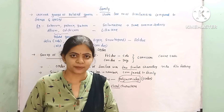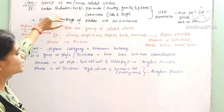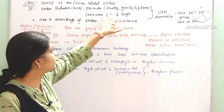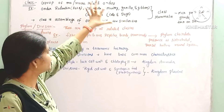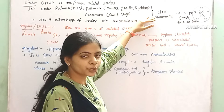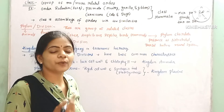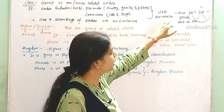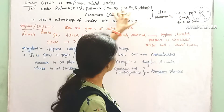Next is class. Class is a group of one or more related orders. Monkey, gorilla, and gibbons come under the order Primates, and cats and dogs under order Carnivora. They were all kept under the class Mammalia.